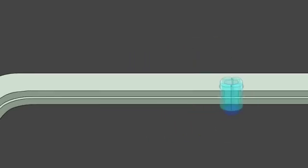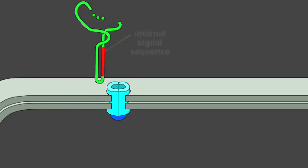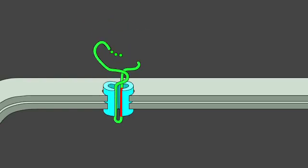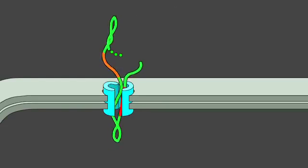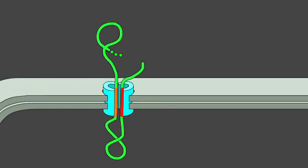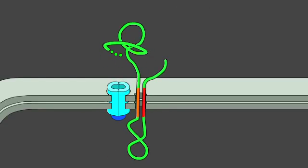In some transmembrane proteins, an internal signal sequence is used to start the protein transfer, which continues until a stop-transfer sequence is reached. The two hydrophobic sequences are then released into the bilayer, where they remain anchored.